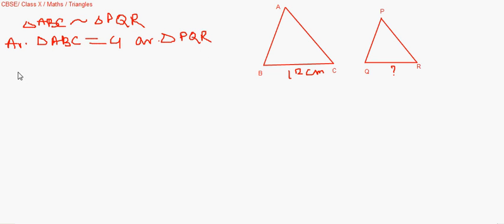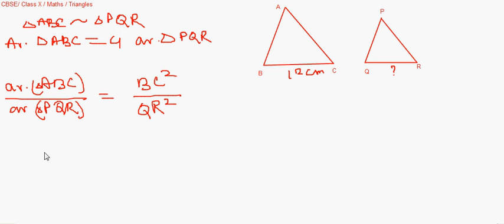So these two triangles are already given to be similar. And they say area of triangle ABC is equal to four times area of triangle PQR. That is four times PQR. We have to find QR. Now because these two triangles are given to be similar, we will write it is equal to the ratio of the squares of the proportional corresponding sides. So area ABC by area PQR, both are triangles, we can write triangles here, should be equal to BC squared by QR squared.